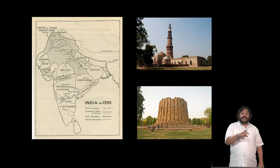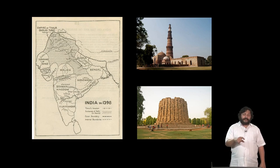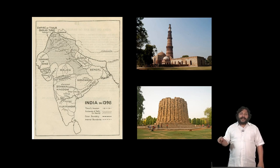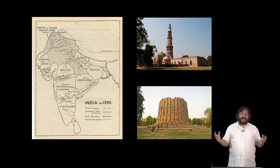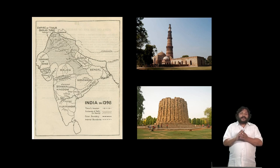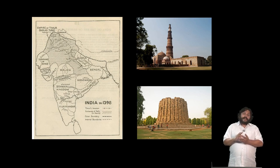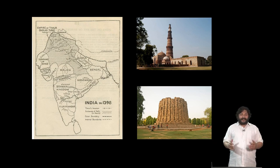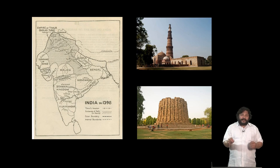Under the Khiljis and the Tughlaqs, there were conquests from the Delhi Sultanate over the complete Indian subcontinent. The Delhi Sultanate starts in the 1290s and is powerful into the 1340s, when Muhammad bin Tughlaq has a very ambitious program to bring the whole of India under his command. In fact, he shifts his capital all the way to Daulatabad, which we will look at this week as well.